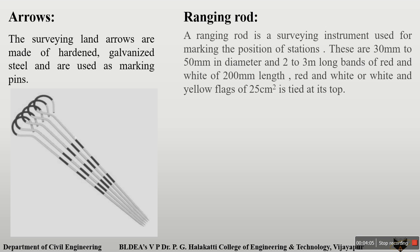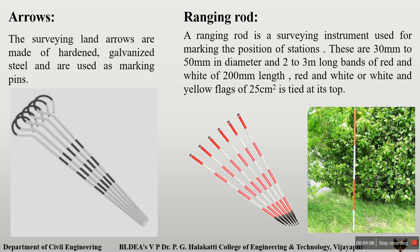The next instrument is the ranging rod. These are made of a hollow pipe with a diameter of 50 mm. The length of these ranging rods is 2 to 3 meters, and in some cases 4 meters. At alternate distances on these instruments, different colors are marked — a combination of red-white or black-white. The main intention of marking these colors is so you can easily identify the ranging rod in the field over longer distances.